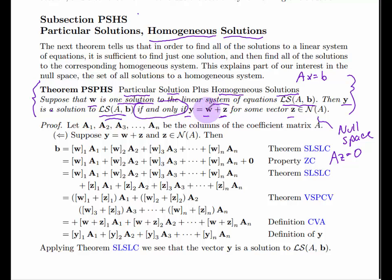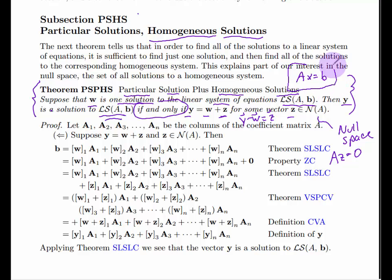You can equivalently write this as Y minus W equals Z — that's the same thing. In other words, the difference between any two solutions of this system is a vector in the null space.